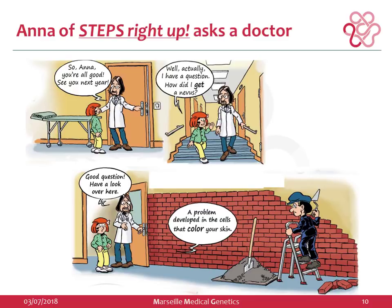The comic book roughly translates to Steps Right Up. STEPS is an acronym for how to deal with how other people might look at you when you appear different due to any congenital anomaly, and gives tips on how to answer confidently and feel good about yourself in social interactions. At the end of the book we included a few pages explaining how nevi develop — here Anna has just finished her visit with the doctor, and as they're leaving, she asks: how did I get a nevus?